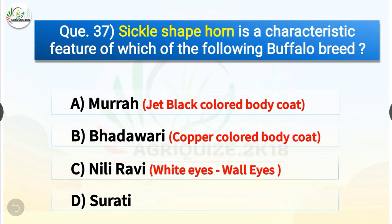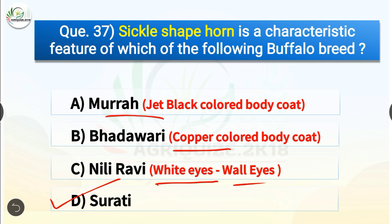Question number 37. Sickle-shaped horn is a characteristic feature of which of the following buffalo breeds? The options are Murrah, Bhadawari, Nili-Ravi or Surati. The correct answer is option D, Surati. So sickle-shaped horn is a characteristic feature of Surati buffalo breed. Murrah has jet-black colored body coat, Bhadawari has copper-colored body coat, and Nili-Ravi has white eyes known as wall eyes.